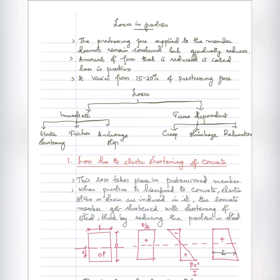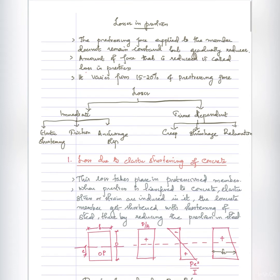Dear students, analysis of prestress to beam is completed. Now we have a portion on loss in prestress. When a force is applied to a member, there are many reasons why it will gradually reduce. The total amount of force is reduced, and we call that loss in prestress. That means it is about 15 to 20%.